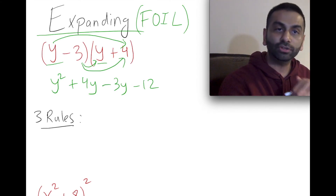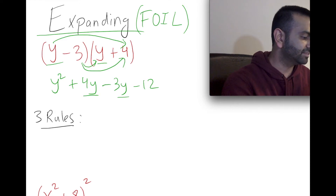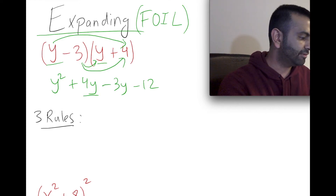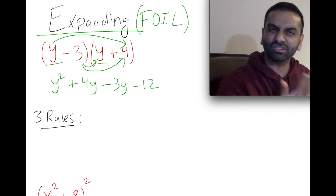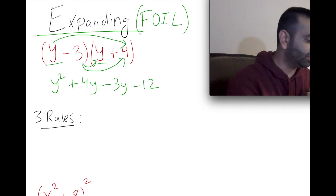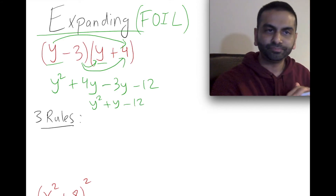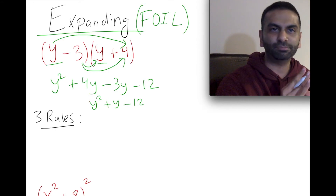You can go one step further and simplify, because the middle two terms are like terms. 4y minus 3y is just y, so you get y squared plus y minus 12. That's how you expand in general.